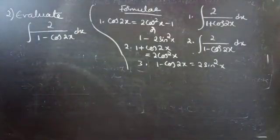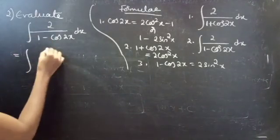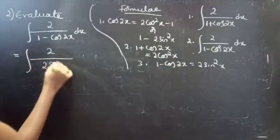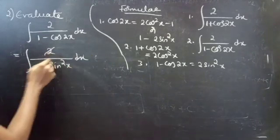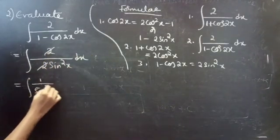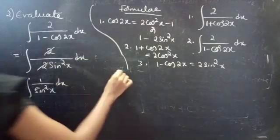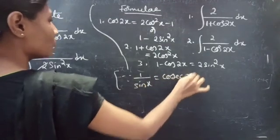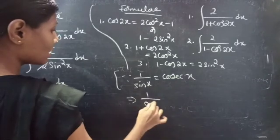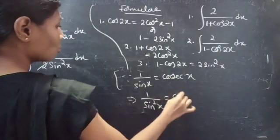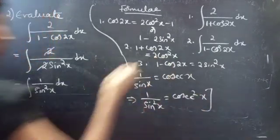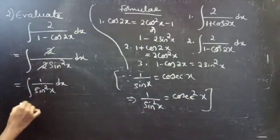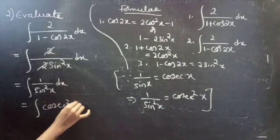So the integral equals integral 2 by 2 sin square x dx. The 2s get cancelled, so this equals integral 1 by sin square x into dx. Since the reciprocal of sin x is cosecant x, squaring both sides gives 1 by sin square x equals to cosecant square x. Now replacing 1 by sin square x with cosecant square x, this equals integral of cosecant square x dx.